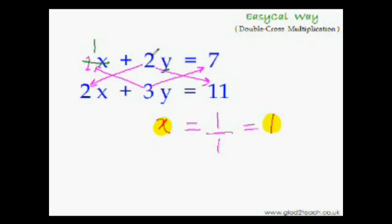I will put the step down. 2y would be equal to 7 minus 1. That is 6. So that means y would be equal to 6 divided by this 2. That is 3. Question solved. x is equal to 1. y is equal to 3.